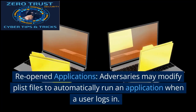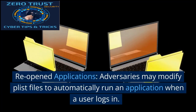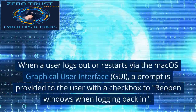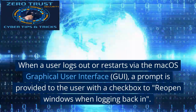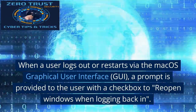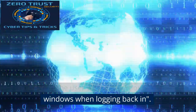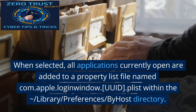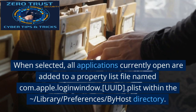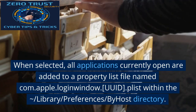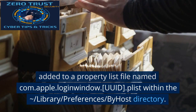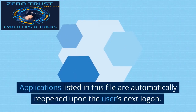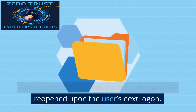Reopened Applications: Adversaries may modify plist files to automatically run an application when a user logs in. When a user logs out or restarts via the macOS graphical user interface (GUI), a prompt is provided to the user with a checkbox to reopen windows when logging back in. When selected, all applications currently open are added to a property list file named com.apple.loginwindow.UUID.plist within the ~/Library/Preferences/ByHost directory. Applications listed in this file are automatically reopened upon the user's next logon.